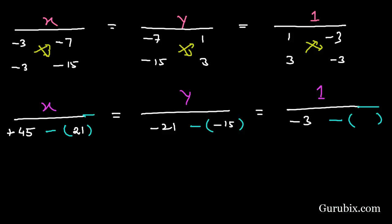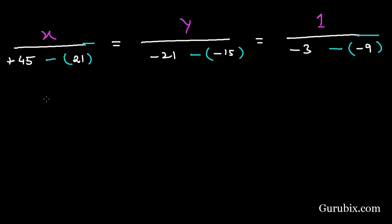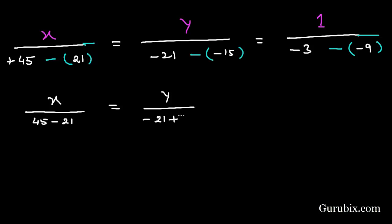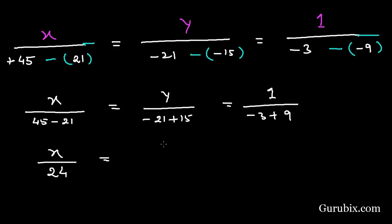Now we solve these values: 45 minus 21 equals 24; minus 21 plus 15 equals minus 6; minus 3 plus 9 equals 6. So we have x over 24 equals y over minus 6 equals 1 over 6.